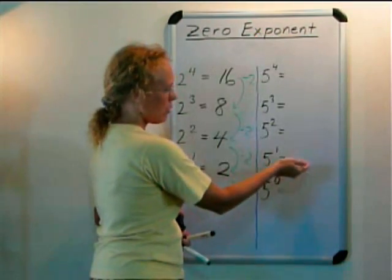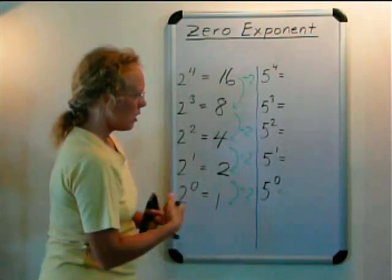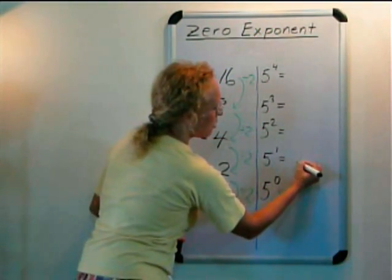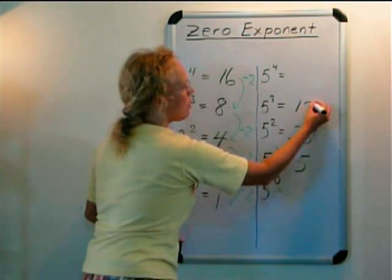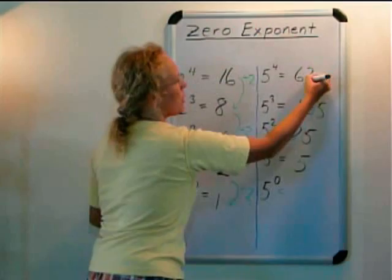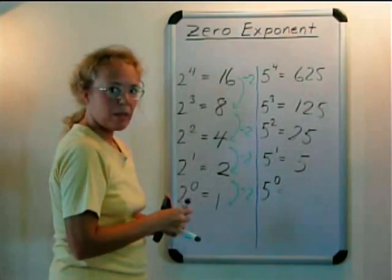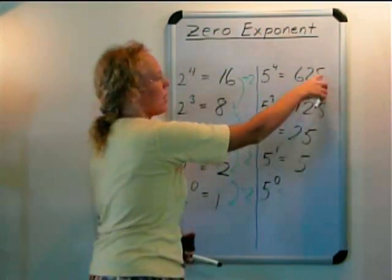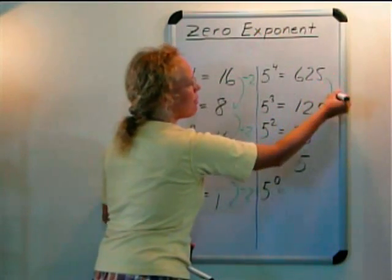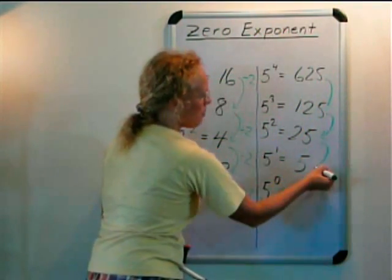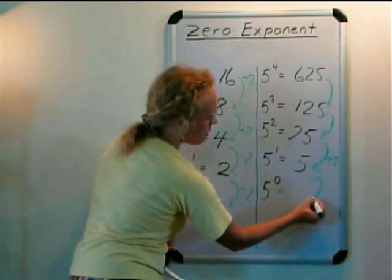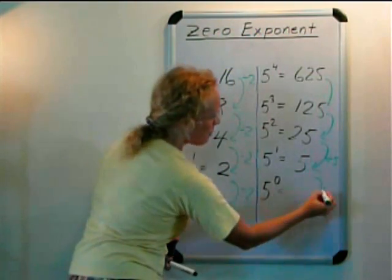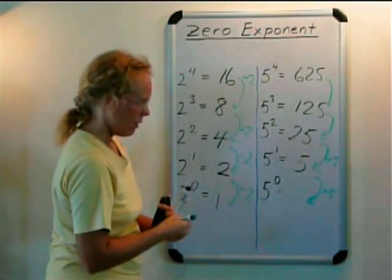And now we do the same, or you do the same with this number and others. 5 to the first power is 5. 5 times 5 is 25. This is 125 and here 625. And the same thing happens since we were multiplying by 5 in each step this way. Then this way we are dividing by 5 each time. And in this step also we divide by 5 and 5 divided by 5 is 1.